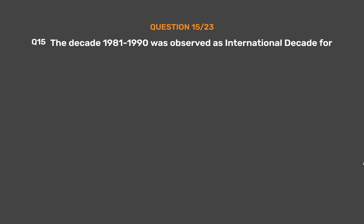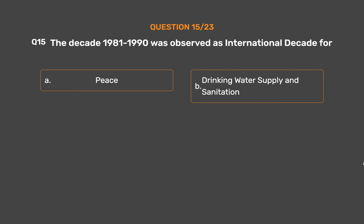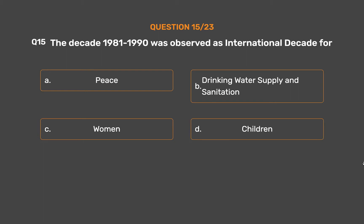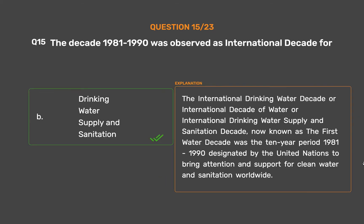Question No. 15. The decade 1981–1990 was observed as International Decade for: Option A, Peace; Option B, Drinking Water Supply and Sanitation; Option C, Women; Option D, Children. The correct answer is Option B, Drinking Water Supply and Sanitation. The International Drinking Water Supply and Sanitation Decade was the 10-year period 1981–1990 designated by the United Nations to bring attention and support for clean water and sanitation worldwide.